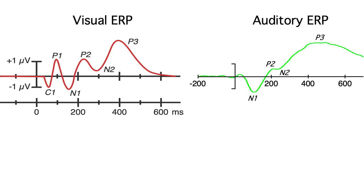You should also know that some components are modality-specific and others are modality independent. For example, the visual n1 is completely unrelated to the auditory n1, but you get the same p3 wave for both auditory and visual stimuli.